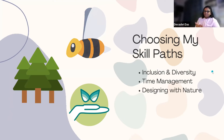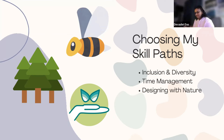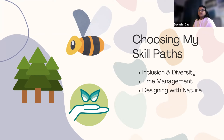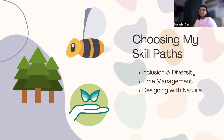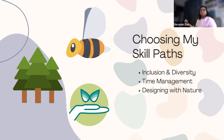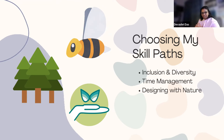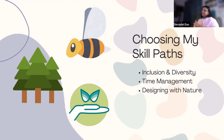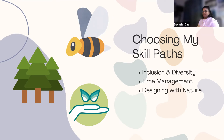After finishing a good chunk of our time at School of Humanity doing our pathway, we moved on to choosing our skill paths. It's usually recommended to have a minimum of one hard skill and one soft skill. I chose one hard skill, which was designing with nature, and two soft skills, which were inclusion and diversity, and time management.